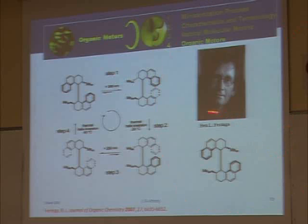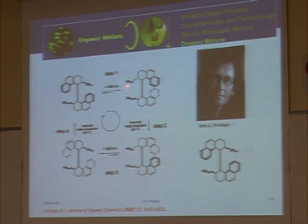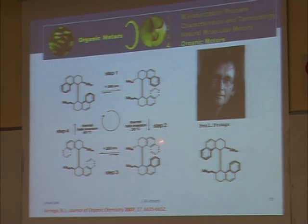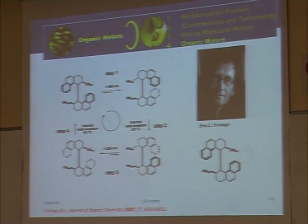Now introducing Feringa's motor. This is the first-generation motor. The difference between this motor and the previously discussed motors is that this motor functions based on cis-to-trans isomerization. Simply by irradiating with UV light, this ring flips around the axle and then thermal helix inversion allows the two rings to pass each other. Then radiation causes cis-to-trans isomerization again, then thermal helix inversion again — achieving a unidirectional rotation. The motor is moving clockwise back to its initial state by two processes: UV irradiation and thermal helix inversion.